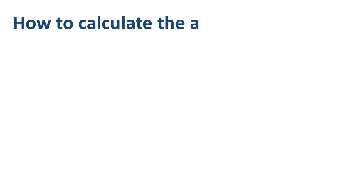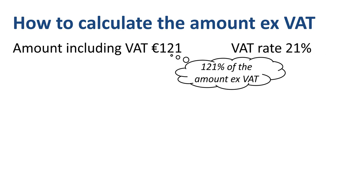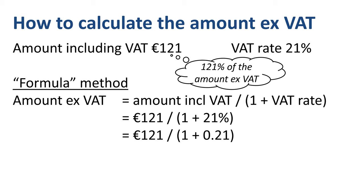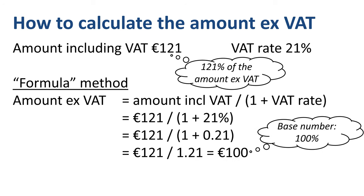How to calculate the amount excluding VAT if we know the amount including VAT is 121 euros and the VAT rate is 21%? In other words, how do we get from 121% back to the base number of 100%? We use a mathematical equivalent of the previous formula: the amount excluding VAT equals the amount including VAT divided by (1 plus the VAT rate). 121 euros divided by (1 plus 0.21) equals 121 euros divided by 1.21, which is 100 euros.